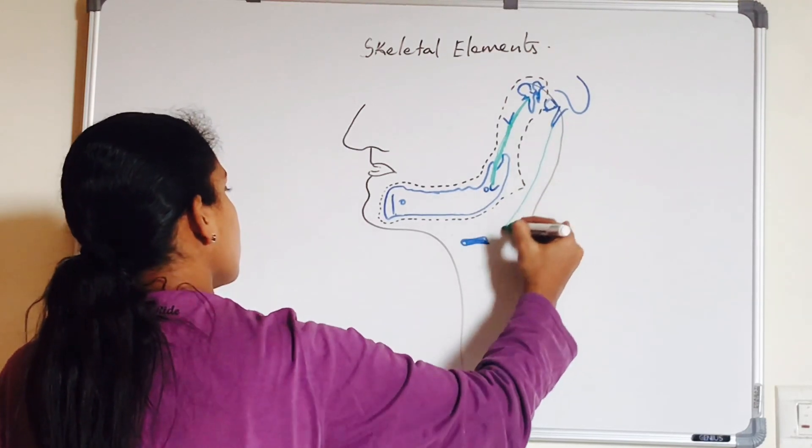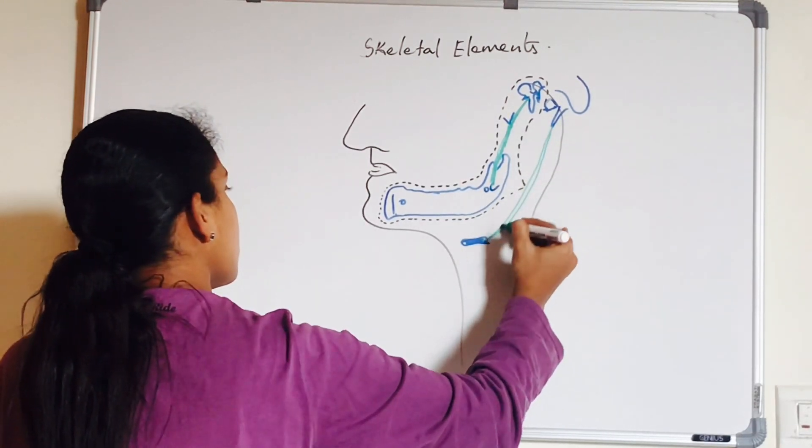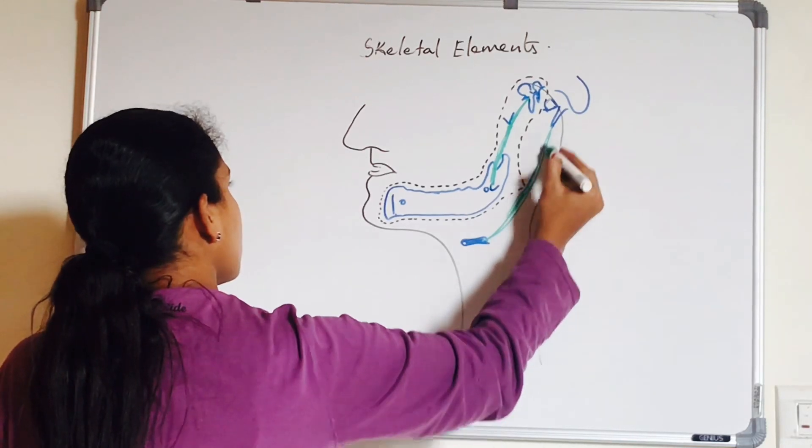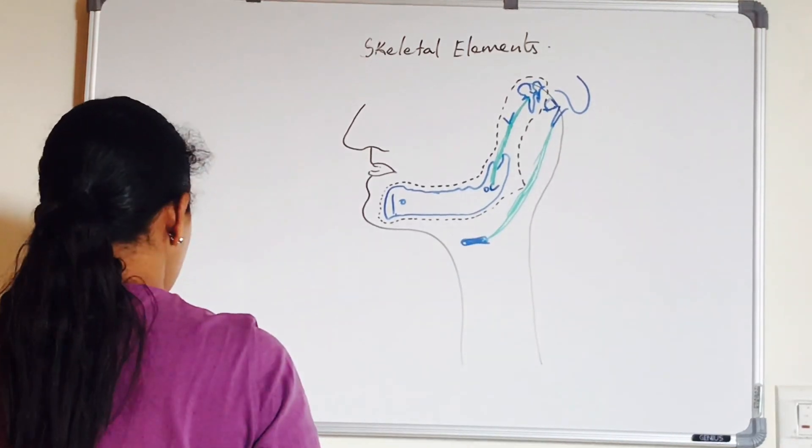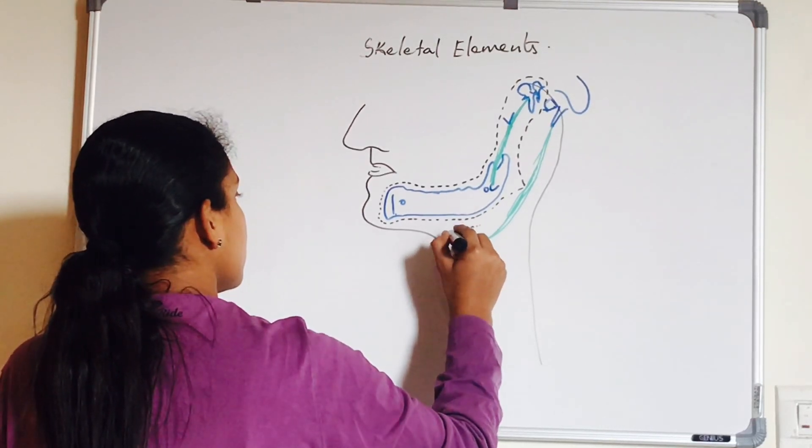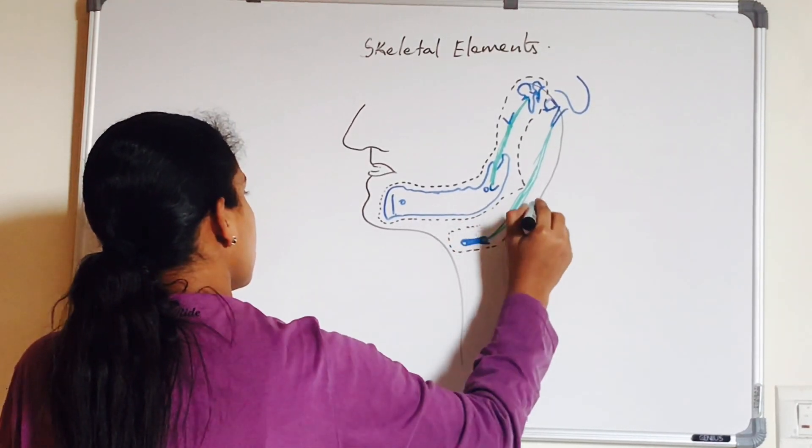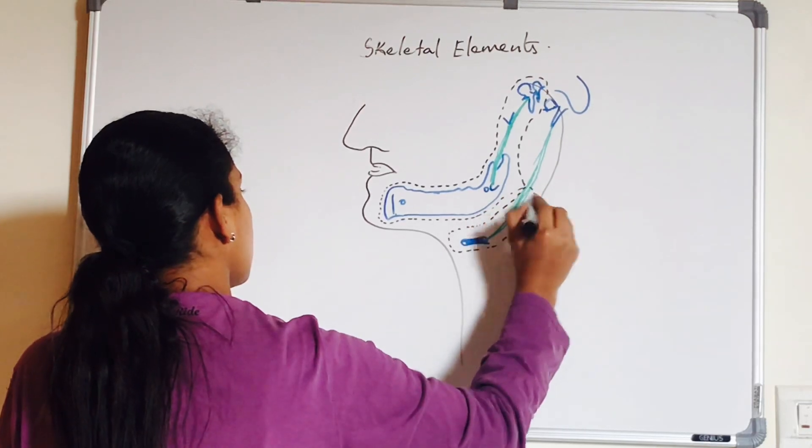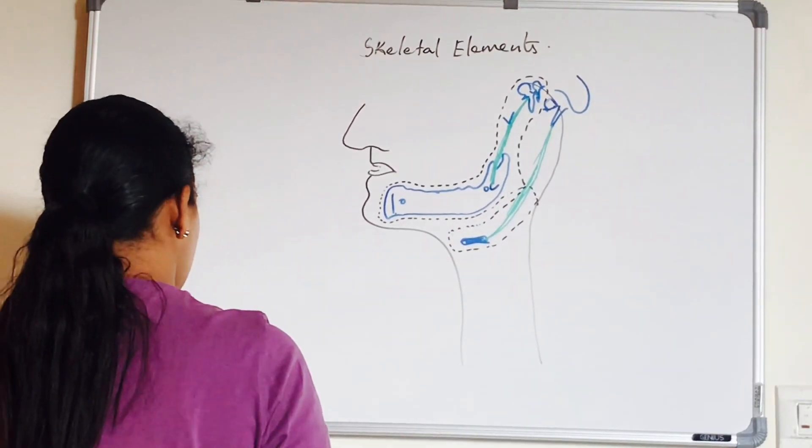And again, the part which regresses to form the fibrous part, that is stylohyoid ligament. And the ventral part is converted into lesser cornu and upper part of the hyoid bone.